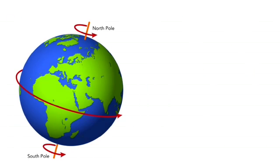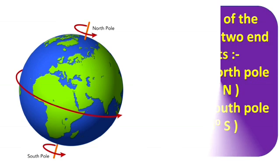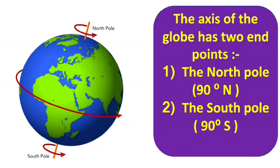The axis is an imaginary line passing through the earth that points north and south. The earth has two end points. The northernmost point is known as the North Pole and the southernmost point is called the South Pole.